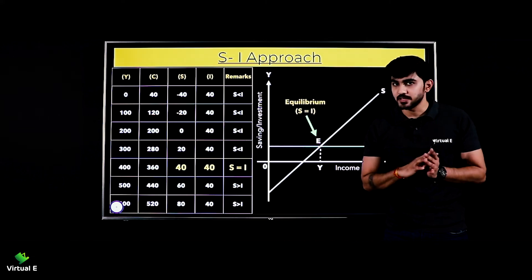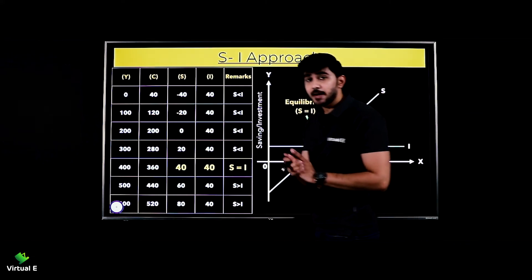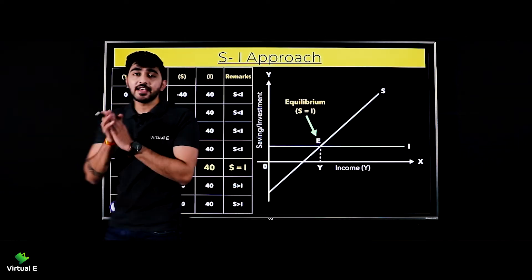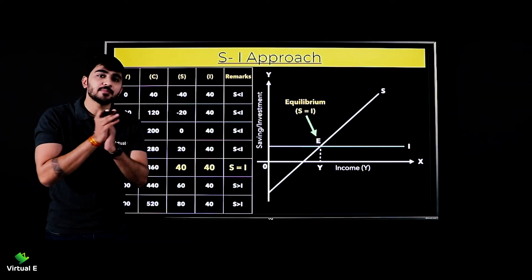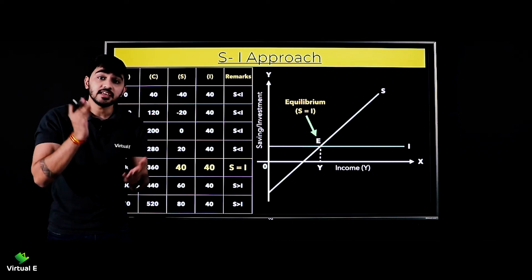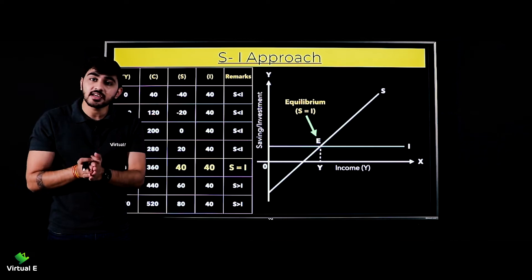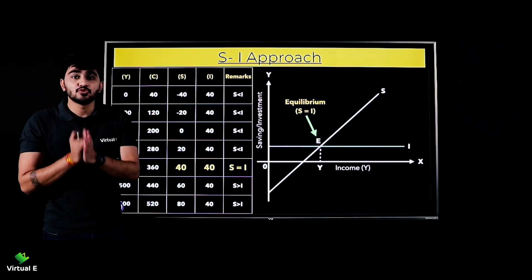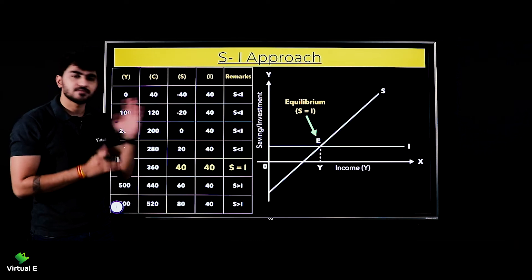Iske baad mein your saving is more than your investment. Agar aapko yaad hai, pichle chapter ke end mein maine bataya tha ki koi bhi economy equilibrium pe tabhi hoti hai jab saving aur investment equal hoti hai. Similarly yeh approach mein bhi hum wahi dekh rahe hain ki saving aur investment should be equal. Ab ek baar graph dekh lete hain.